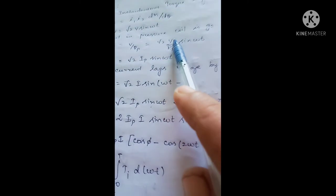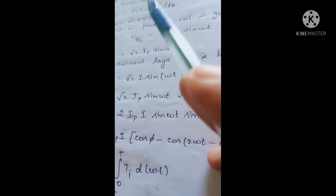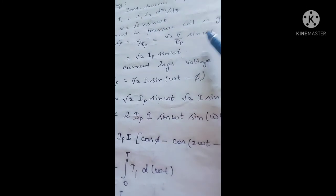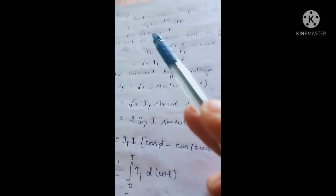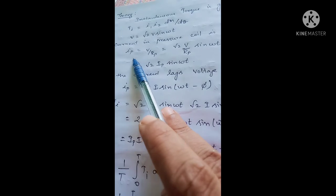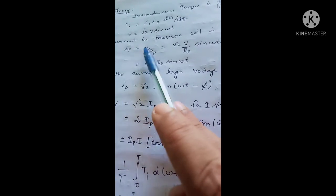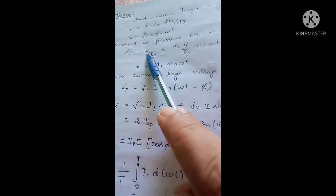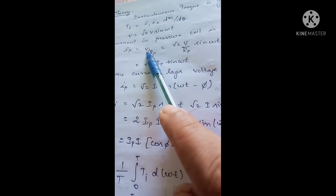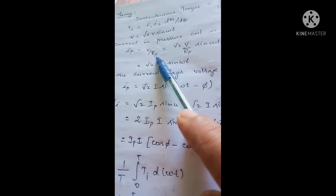We have two coils: the current coil (fixed coil) and the pressure coil (moving coil). The current in the pressure coil is given by Ip = V / Rp, where V is the voltage across the pressure coil and Rp is the resistance of the pressure coil.